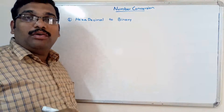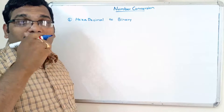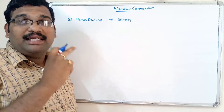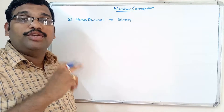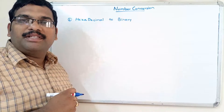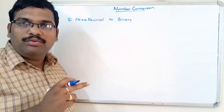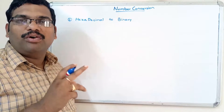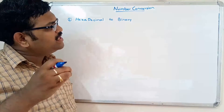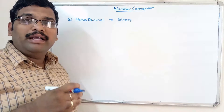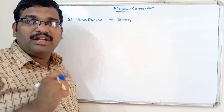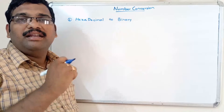How to convert hexadecimal to binary. We know that the base of hexadecimal is 16, and hexadecimal numbers can be represented from 0 to 9 and A to F. The binary base is 2 and consists of only 0 and 1. This is similar to the conversion of octal to binary — consider each and every positional value and represent it in a 4-bit group.